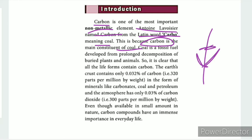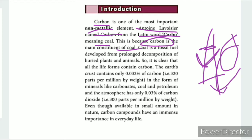In ancient times, there were many forest animals and plants. Over time, forests were buried underground. When subjected to pressure and temperature over time, this organic matter transformed into what is called coal. If we examine coal, it is essentially carbon. Plants and animals are also made of carbon.